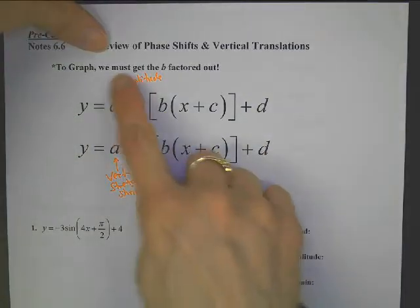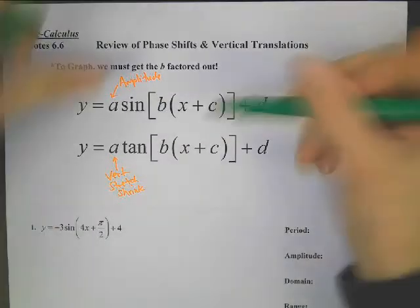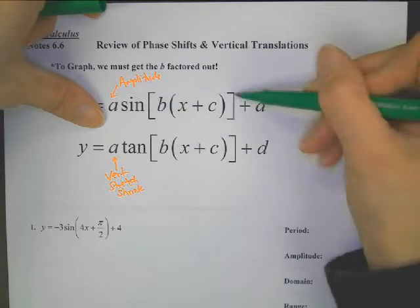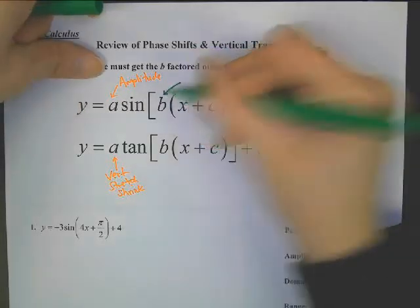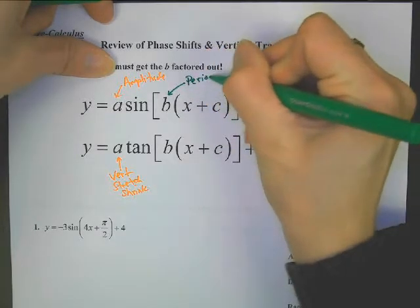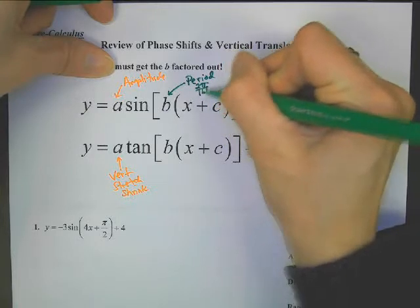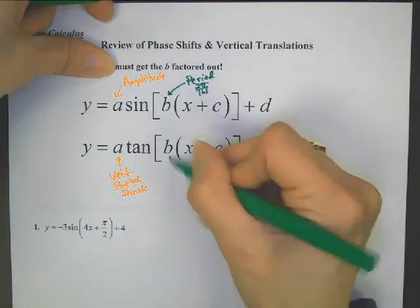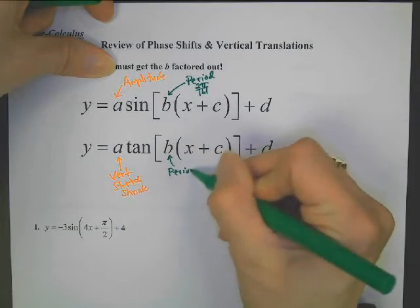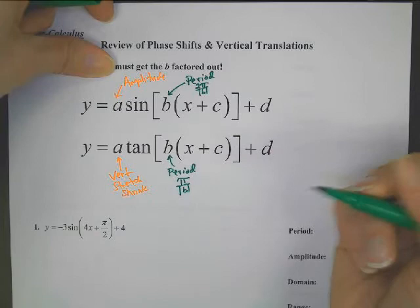The B value — notice that B must be factored out, so B is already factored out in front of the X, still within the sine. For sine, cosine, and their reciprocals, this affects the period, and the formula for period is 2π divided by the absolute value of B. But for tangent and cotangent, still affecting the period, the formula is only π divided by the absolute value of B.